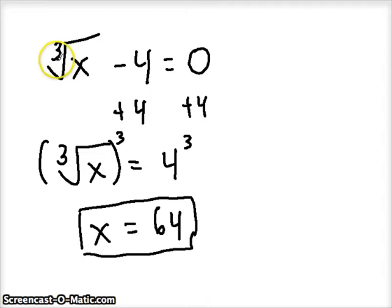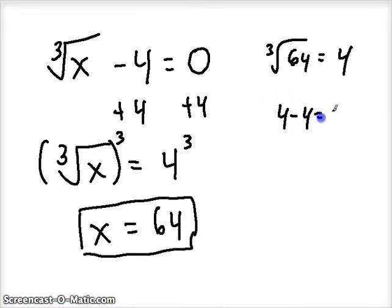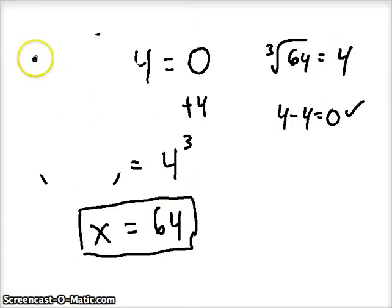Check a couple things. We had an odd root, so we only have one real solution. Well, that's what we got. If I plug it back in, the cube root of 64 is 4, and 4 minus 4 is 0. So it checks out. That's a true solution. Let's do another example.